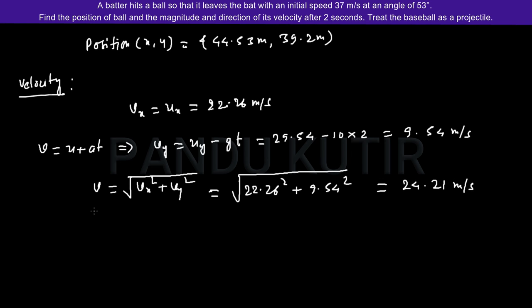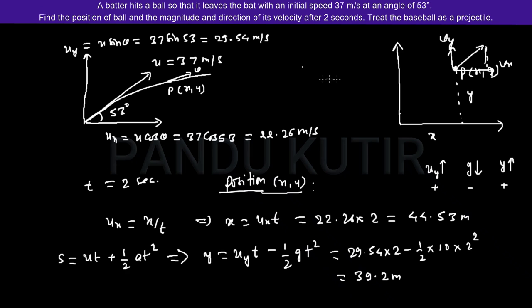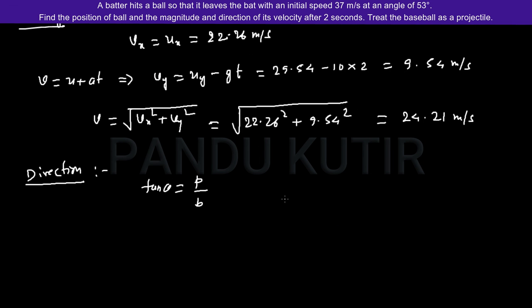This is the velocity after 2 seconds at point P. Also for direction, to calculate the direction means to calculate the angle at the given point. We have tan theta equals Vy by Vx. The triangle becomes like this. This angle is theta and this one is Vx and this one is Vy.